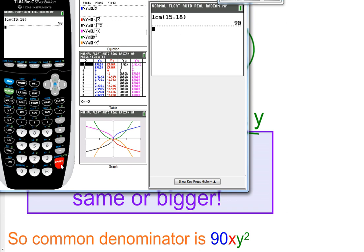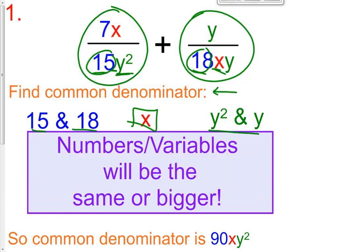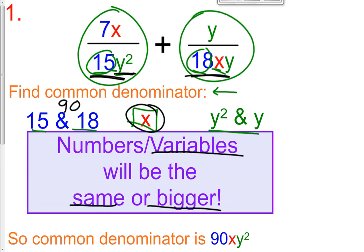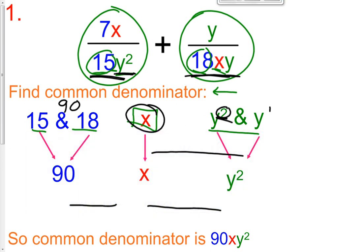15 goes into 90 and 18 goes into 90 — that's the smallest number both go into. For variables, they will always be the same or bigger. So if you have 0 x's in one and 1 x in the other, you take the one with 1 x. If we have y² here and y to the first, y² has the bigger exponent, so y² is going to be your common denominator. It's always going to be the bigger one. So your common denominator is 90xy².